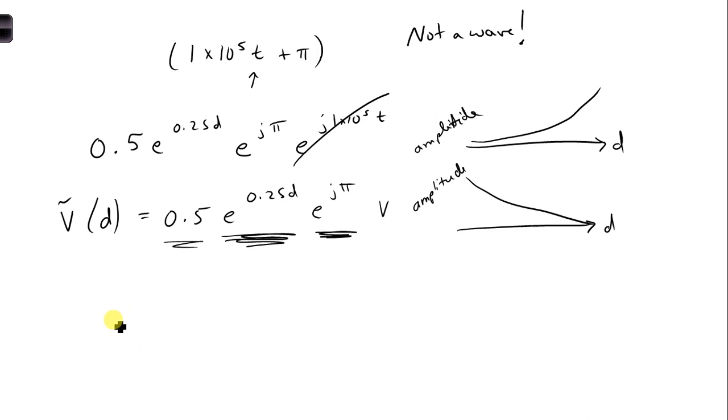All right, then the last thing is to find the frequency at which this phasor is valid. So for that, same as the last one, we take omega over 2 pi.